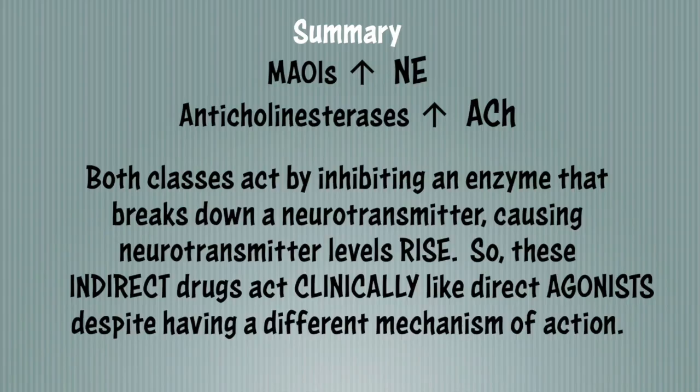In summary, we've talked about two autonomic indirect acting agonist drug classes, both of which have misleading names, and both act by inhibiting an enzyme that breaks down a neurotransmitter. We're going to revisit norepinephrine and acetylcholine when we cover the CNS, which is our next unit.